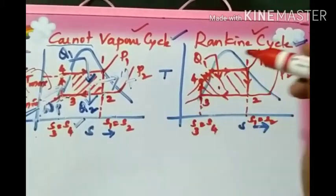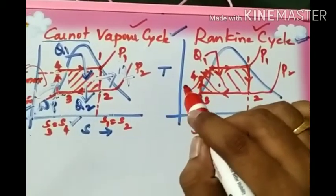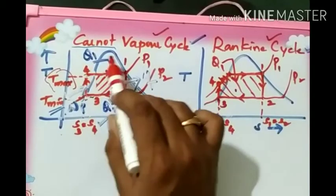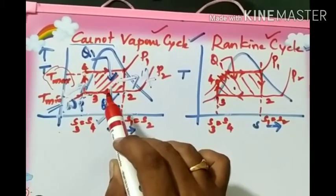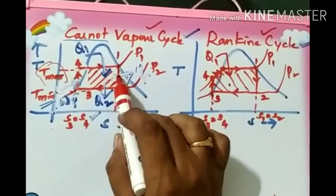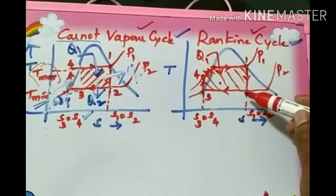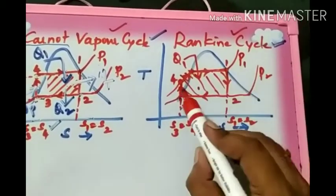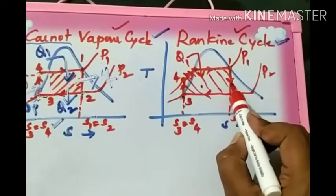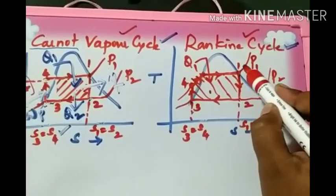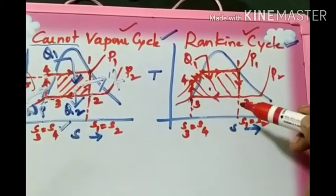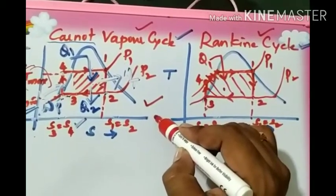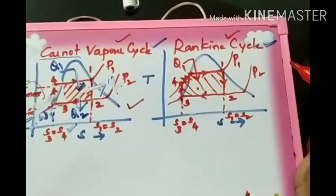In summary, comparing the two cycles: in the Carnot vapor power cycle all four processes are ideal — two are isothermal and two are adiabatic. Whereas in the Rankine cycle, two processes are constant pressure processes and two are adiabatic processes. Since we cannot idealize the isothermal processes of heat addition and heat rejection in practice, the Carnot vapor power cycle cannot be practically implemented, and we always discuss power plants with respect to the Rankine cycle.